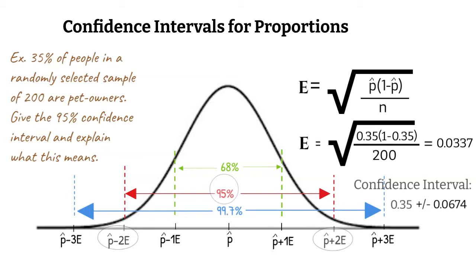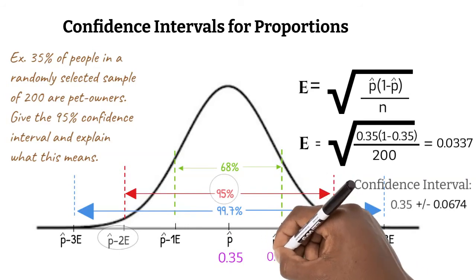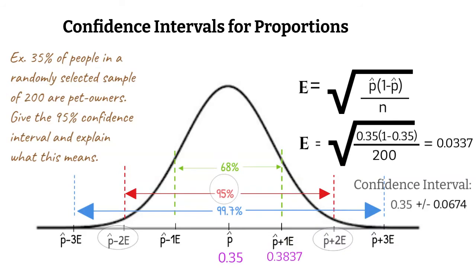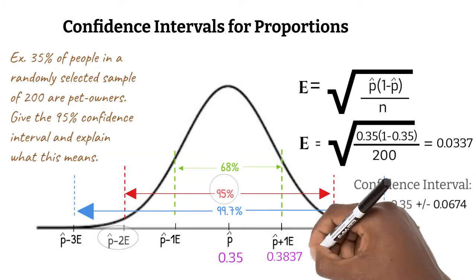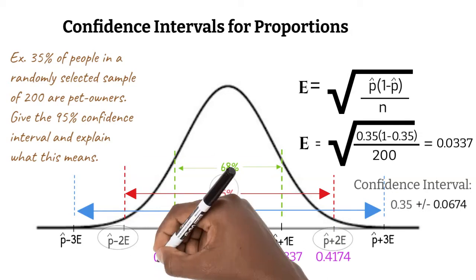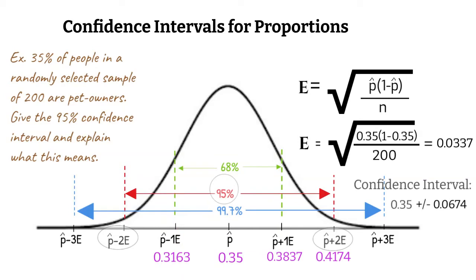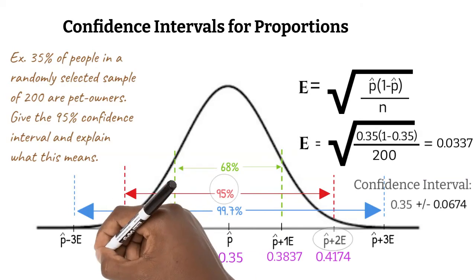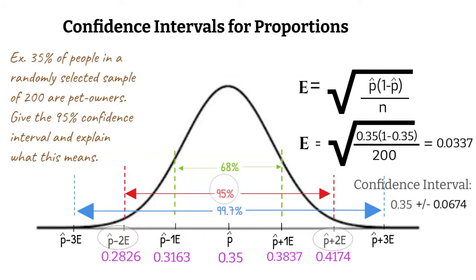Let's see this on our curve. Our proportion, 0.35, is in the center. We add one standard error to get 0.3837, then a second standard error to get 0.4174. We take away one standard error to get 0.3163, then a second standard error to get 0.2826.